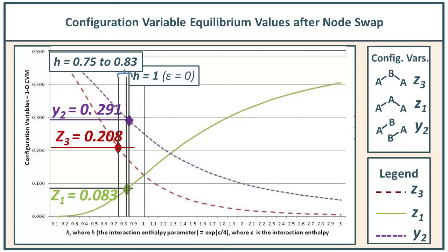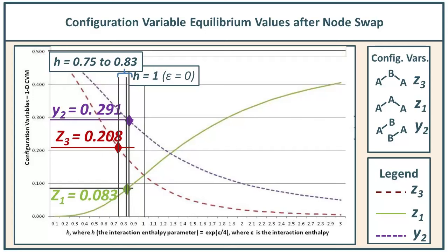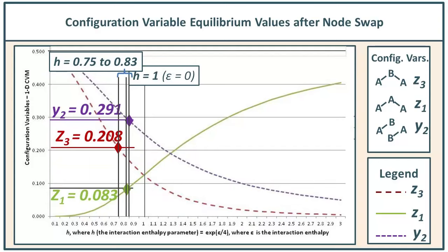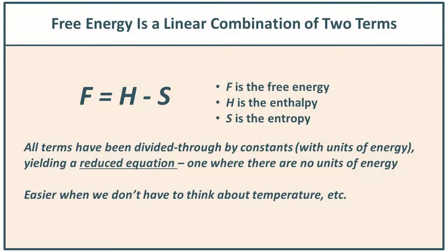We have a set of three different possible h values ranging from approximately 0.75 to about 0.83. We see a slight dispersion, but they're definitely within a range to the left of where h equals 1 (or epsilon 1 equals 0), meaning we have a negative value for epsilon 1. Let's go back to our original free energy equation for the 1D CVM and find out what that means in terms of the enthalpy term. The free energy equals the enthalpy minus the entropy, so we often think in terms of the neg-entropy of a system.